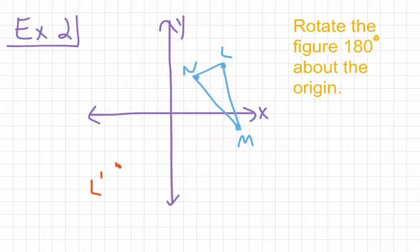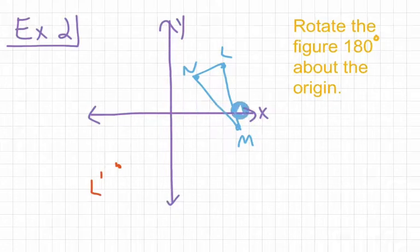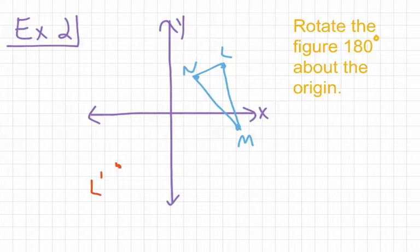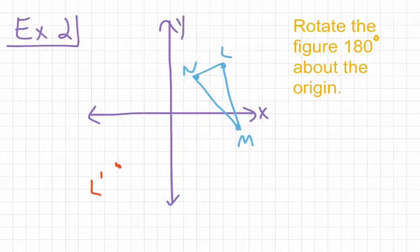For M prime, we recognize the coordinates for point M as 5 comma negative 1. So for M prime, the coordinates are going to be negative 5 comma positive 1. And we end up with M prime being right there.